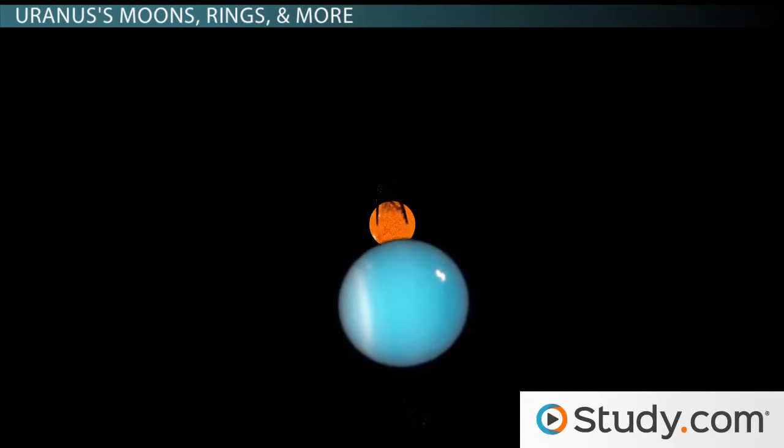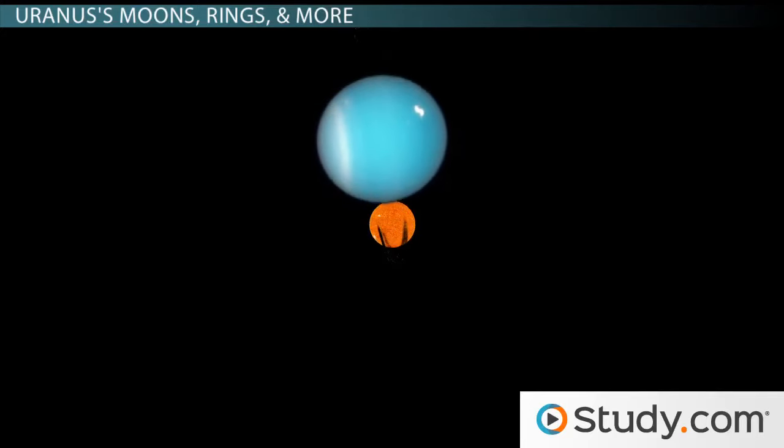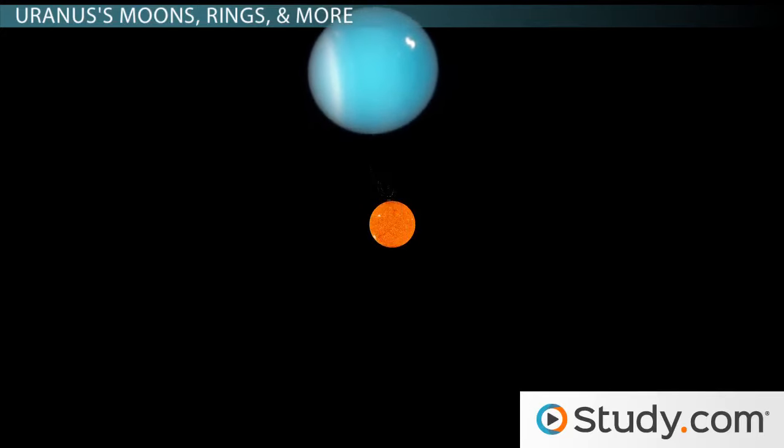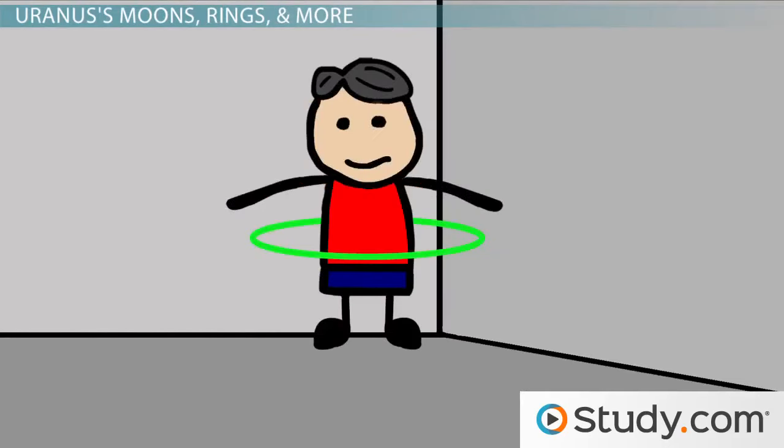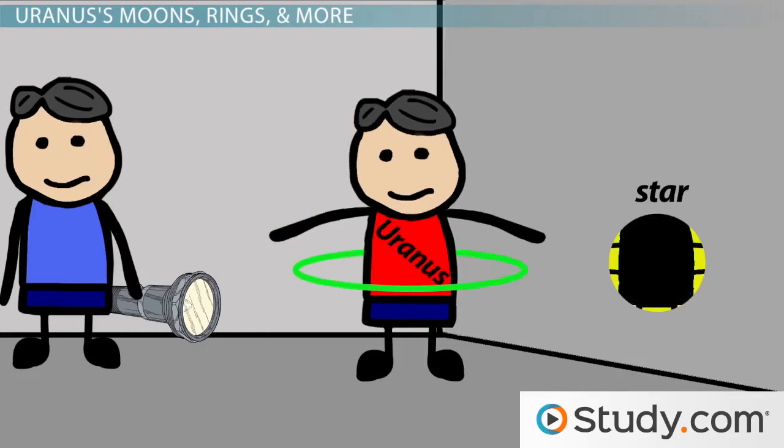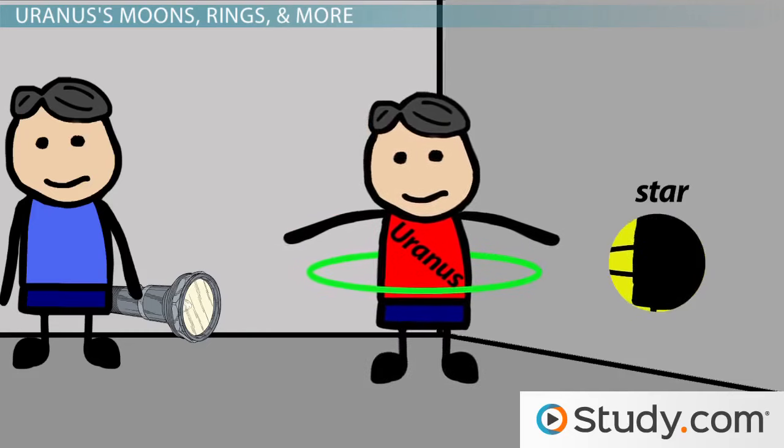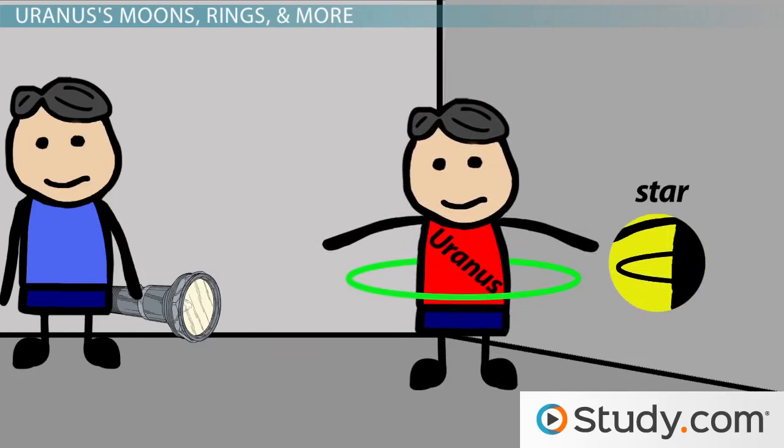So, when Uranus passed in front of a star, its rings blocked the star's light temporarily and gave the rings away. Just imagine this. Go and place a hula hoop around your waist. Have another friend turn on a flashlight that's facing a white wall. That'll be our star. If you, Uranus, pass directly in front of the flashlight, the star, you'll block the light. But as you keep moving, you'll see the hoop, the rings, also cast a shadow as it blocks the light. That's Occultation. And that's how the rings were discovered.